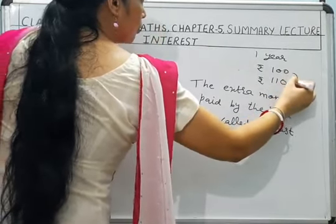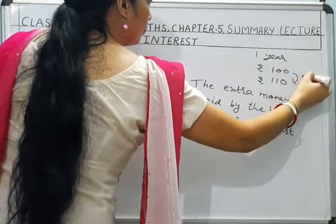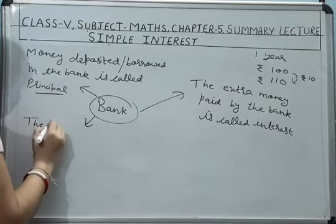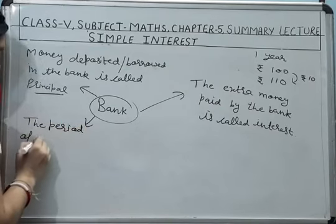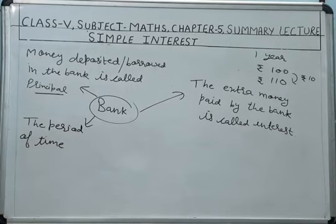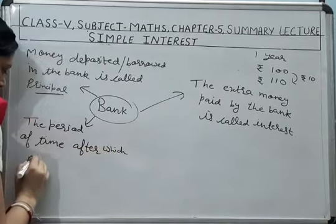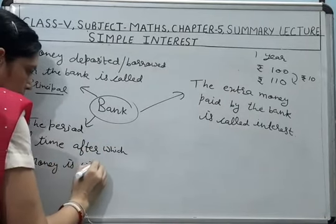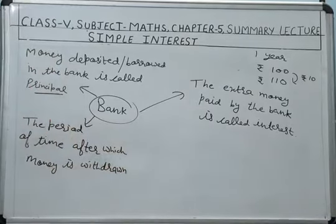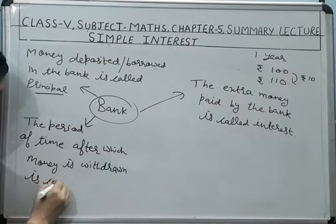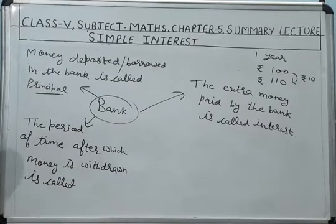The extra money paid by the bank is called Interest. So here the extra money is Rs. 10, which is the interest received by Rohan. The next term is Period of Time — the period of time after which money is withdrawn, or in the case of borrowed money, the time after which it is returned to the bank, is called Time.